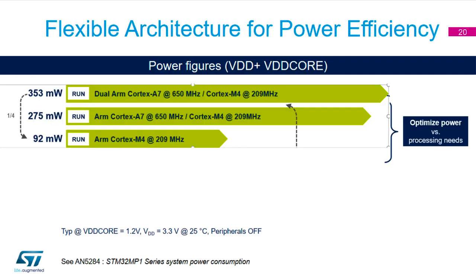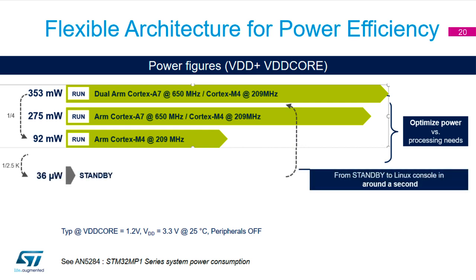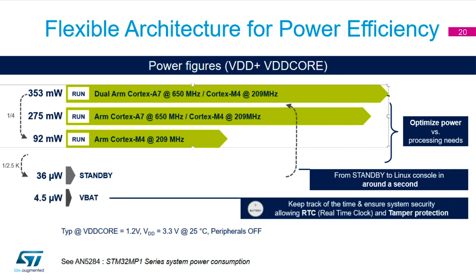For power consumption: running both the dual-core A7 and M4 consumes approximately 350mW. With one A7 disabled or on the single-core MP151, it's around 275mW. Dropping the A7s into sleep or stop mode while keeping the M4 running reduces consumption to about 92mW. In standby mode the chip draws approximately 36 microwatts — this is the chip only, not including DDR in self-refresh. In VBAT mode, consumption drops to around 4.5 microwatts, enabling proper low-power applications.